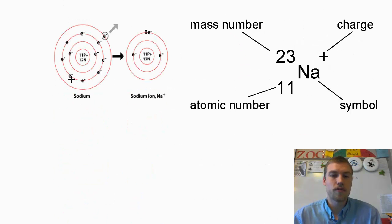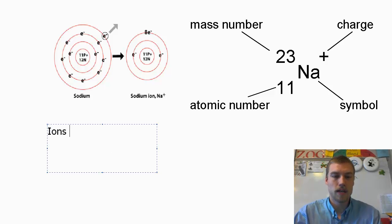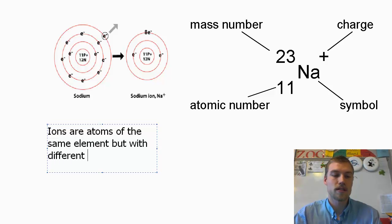All right, so that's isotopes. Now let's go ahead and move forward. We're going to talk about ions. Ions are going to be atoms of the same element but with different numbers